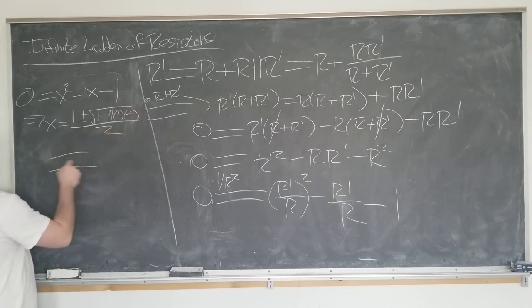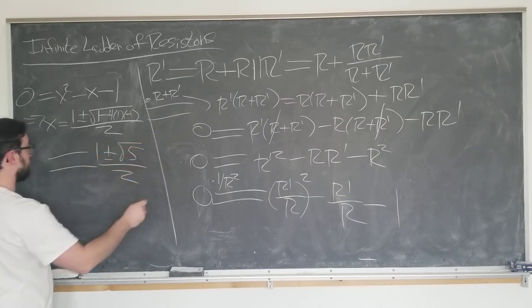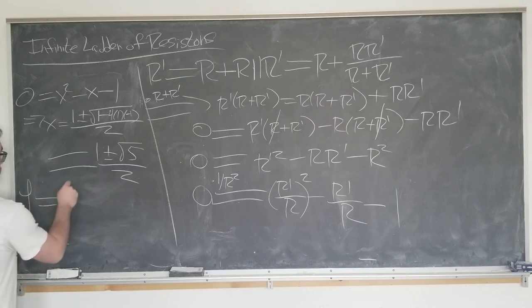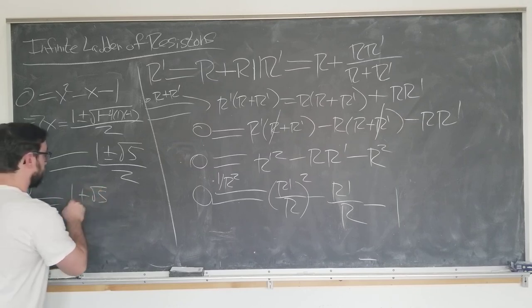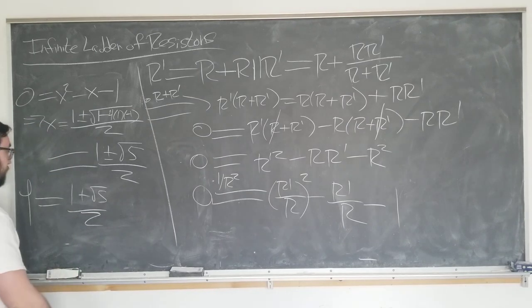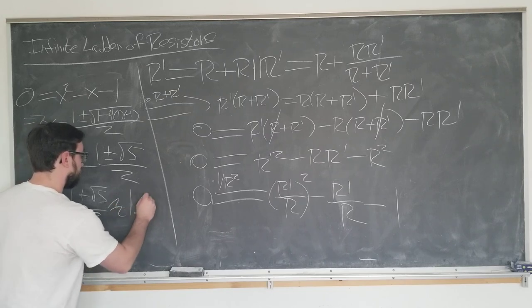So we get x equals one plus or minus the square root of five over two. And we are going to choose the positive solution, since in this context, resistances are always positive. One plus the square root of five over two, which is approximately 1.618.